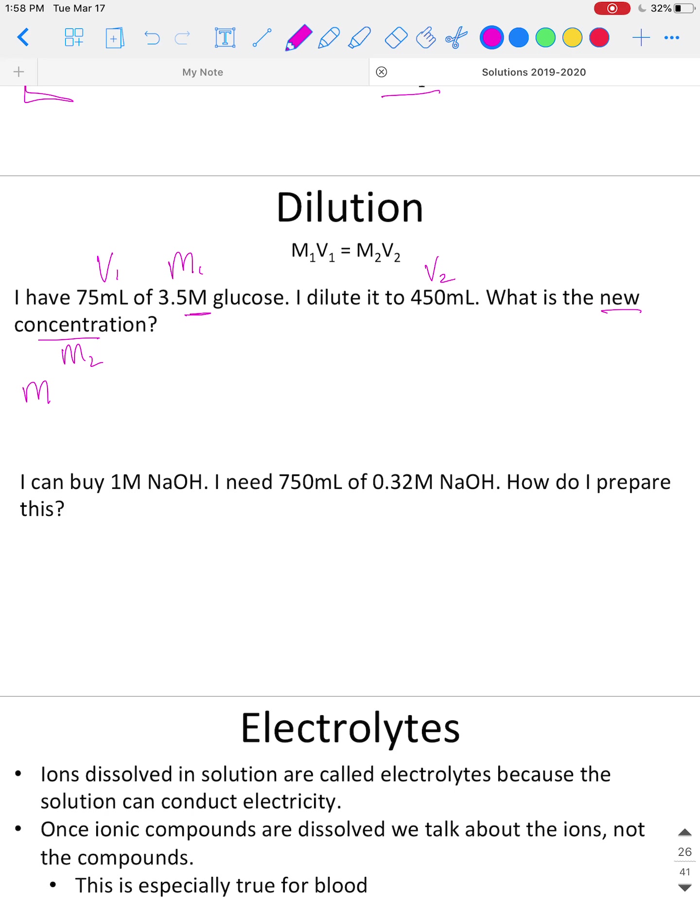So I'm going to rearrange the equation first. If we have M1V1 equals M2V2, divide both sides of the equation by V2, and it cancels out on this side. That's our new equation. Now we can plug everything in. It's okay to do this equation with units of milliliters and molarity. You don't have to convert the volumes to liters or anything like that. You can plug everything in as is.